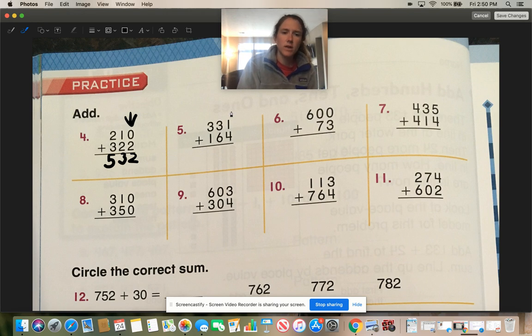Let's go on to the next one. Remember we always start in the ones place. So 1 plus 4 is 5. 3 plus 6 is 9. 3 plus 1 is 4. So 495.